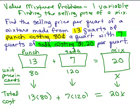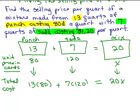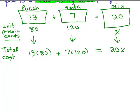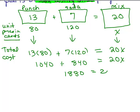And those must be equal to each other. So now we have this equation to solve. So I have to do 13 times 80. That's 1,040 plus 7 times 120. That's 840 equals 20X. So let's see. If I add on the side here, I get on the left side, I've got 1880 equals 20X. And I'll just divide both sides by 20 to isolate the variable. And I get 94 equals X or X equals 94.